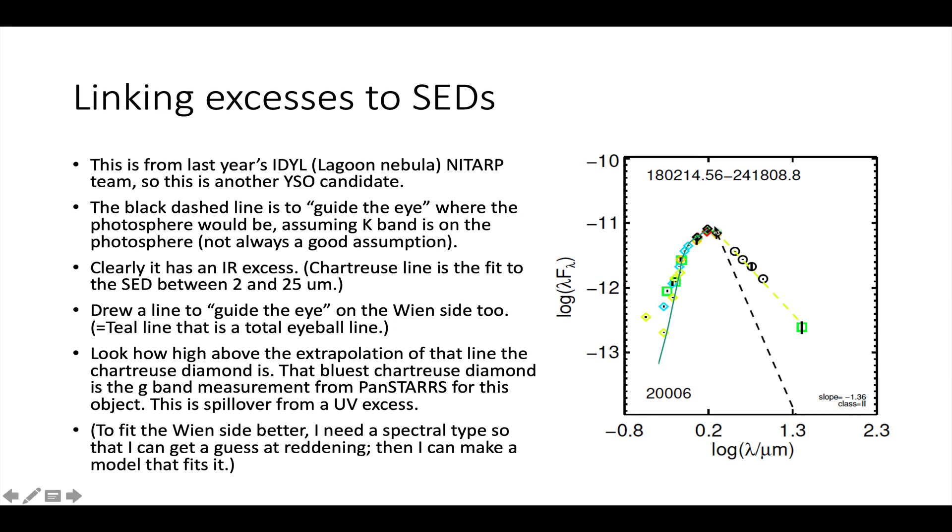In order to do a better job of fitting this side, I need a spectral type because then I can get a stellar model and I can fit it to everything K and shorter and then I can more definitively say, okay, this is an excess of this many magnitudes and that's an excess of that many magnitudes.